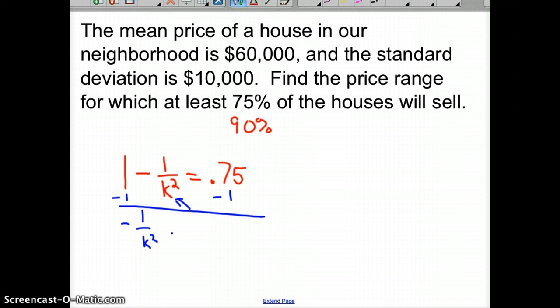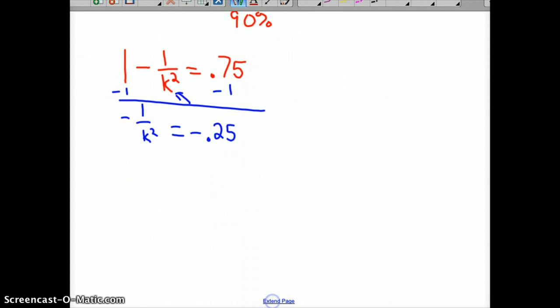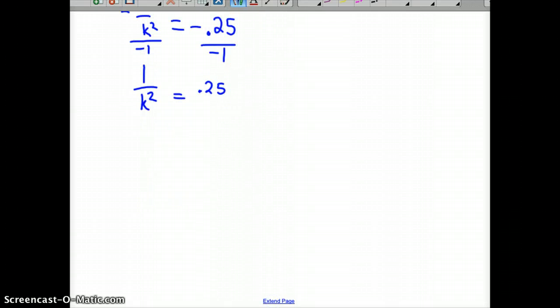First off, I've got minus 1 over k squared. And then I'm going to subtract the 1 over here with the 0.75. You've got negative 1 over k squared then would equal to negative 0.25. And what's kind of nice about this, once you do that, then you can change your signs by dividing by a negative 1. And so 1 over k squared equals 0.25, which if you wanted to go ahead and do that, 1 over k squared equals 1 quarter. If you want to convert that to a fraction, you wouldn't have to. And then cross-multiply. So k squared equals 4.